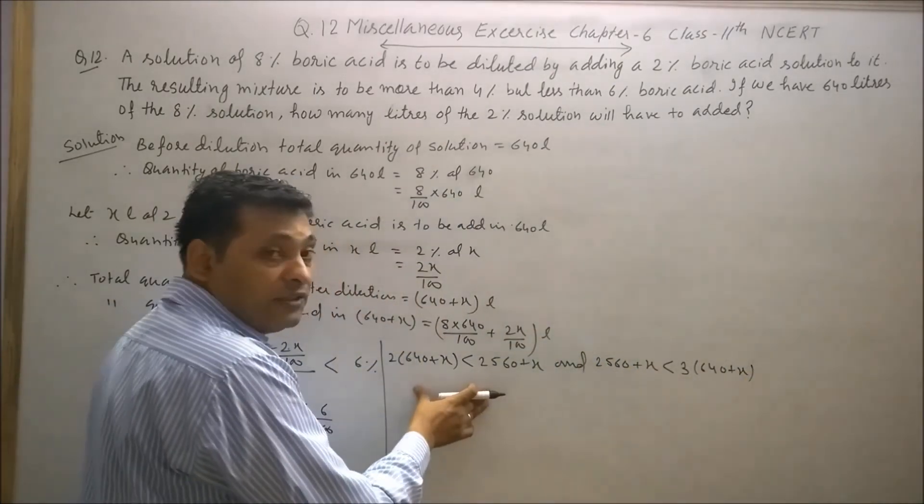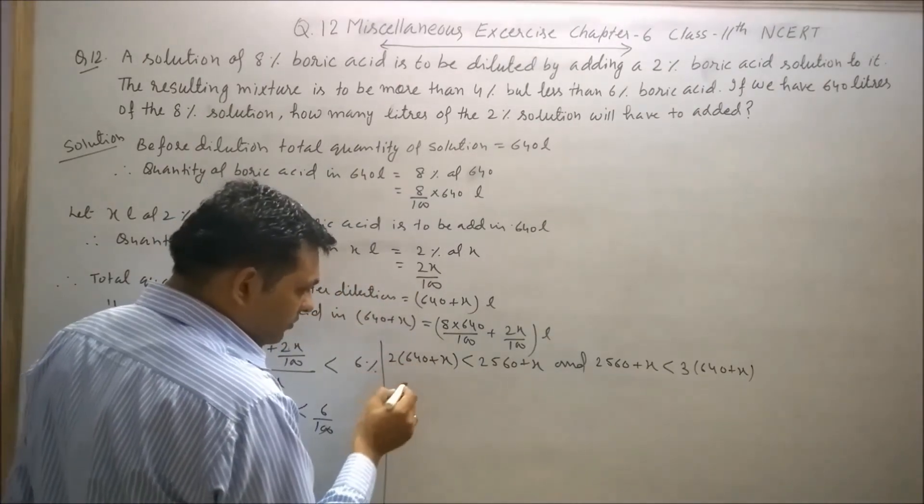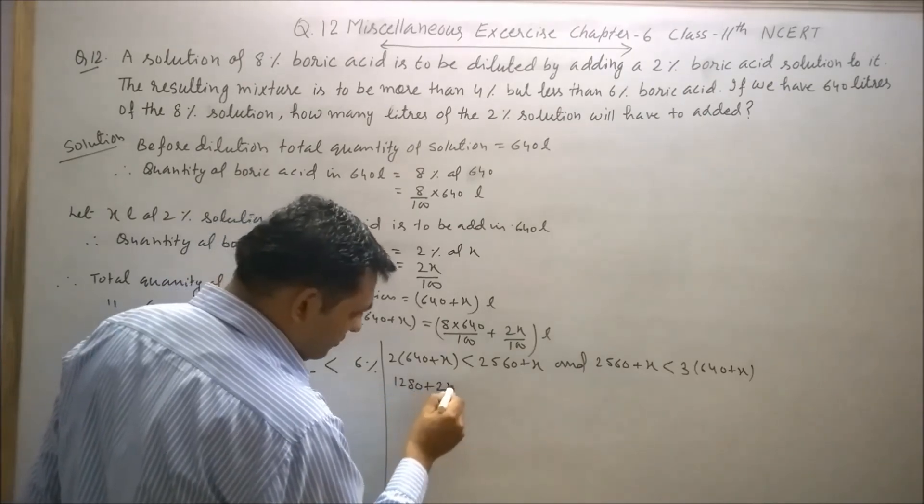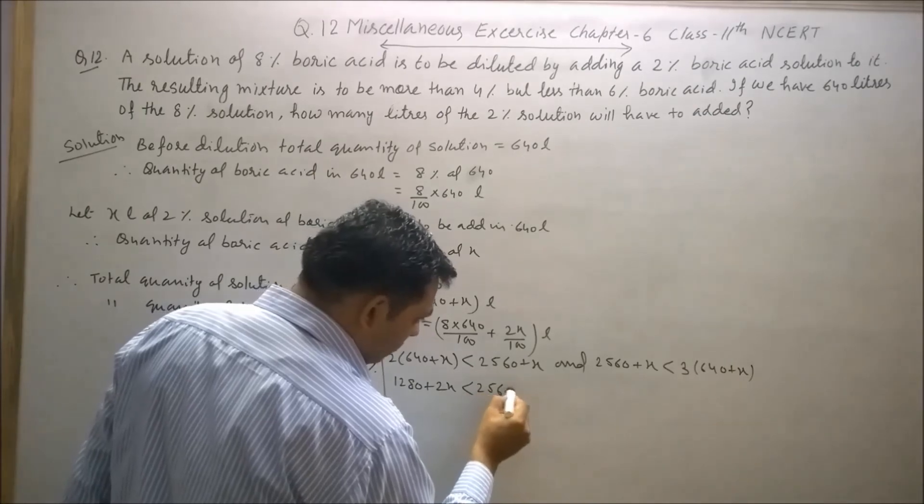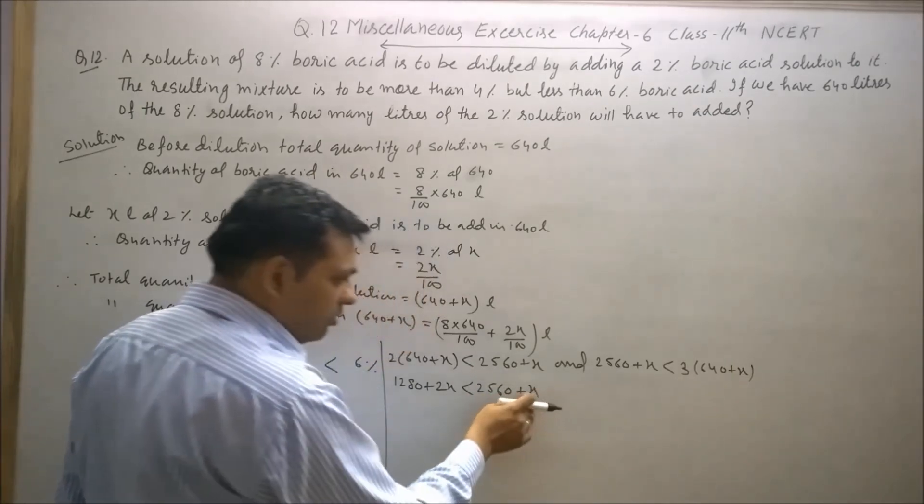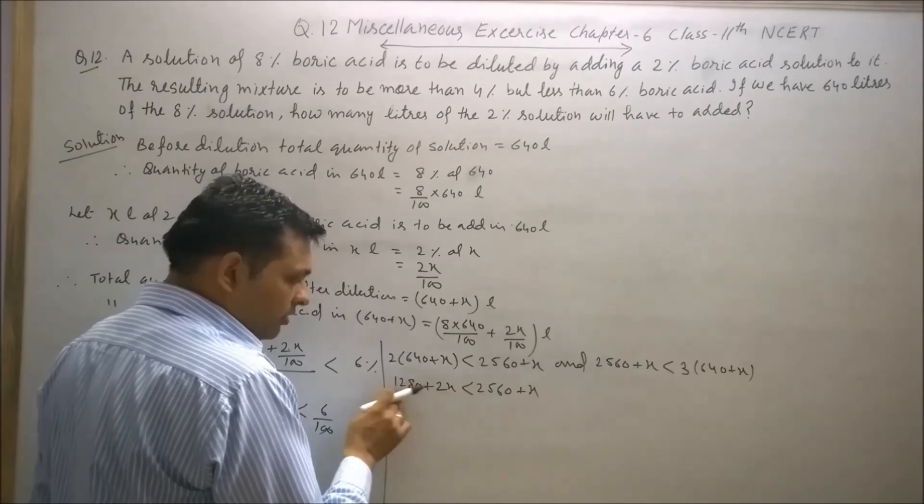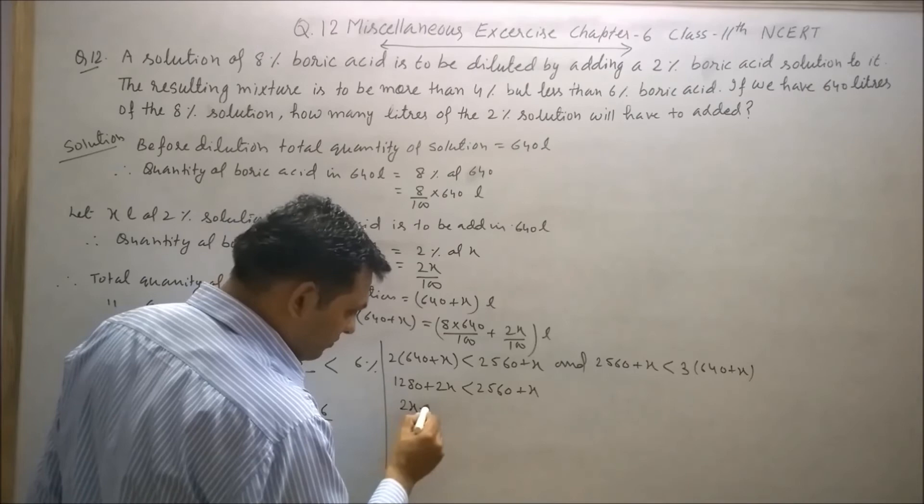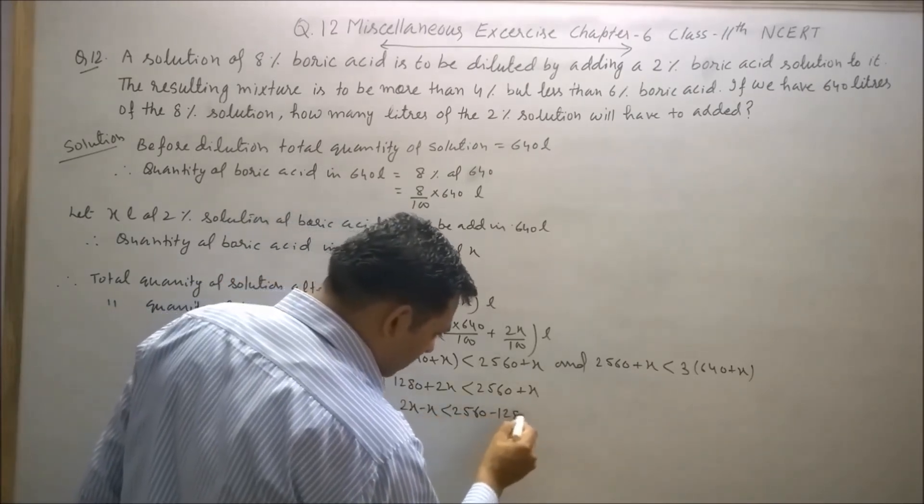Now solve these inequalities one by one. 2×640 is 1280 plus 2x, which is less than 2560 plus x. Now transpose x to the left-hand side and 1280 to the right-hand side. 2x minus x is less than 2560 minus 1280.